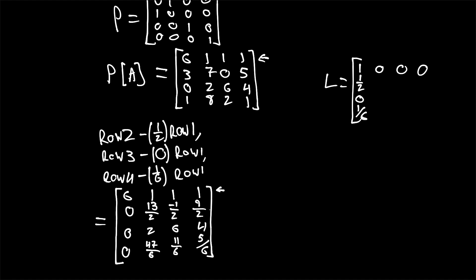Applying these operations: row 2 minus 1/2 of row 1 — since this is 1, we're subtracting 1/2 from 7, giving us 13/2; and subtracting 1/2 from 0, giving us negative 1/2. For the bottom row, subtracting 1/6 of row 1: 1 minus 1/6 of 6 is 0, so it's just 1 minus 1. We have 8 minus 1/6, which is 47/6, and so forth through the rest of that row. Next we look at the second row and determine what operations need to be done.